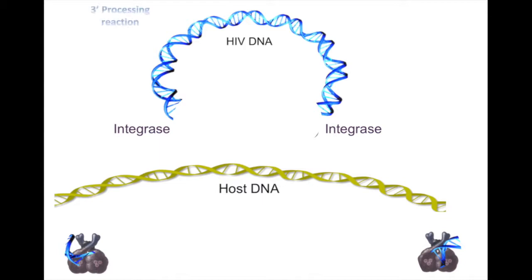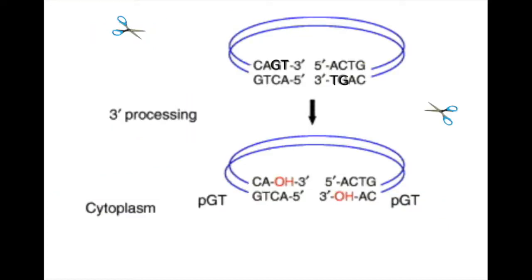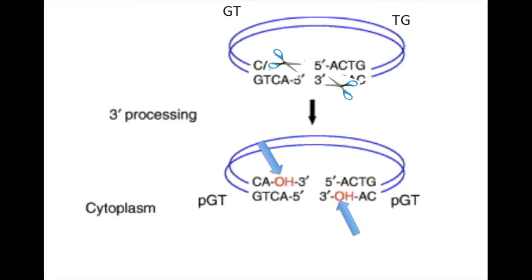HIV integrase undergoes a 3' processing reaction to integrate the HIV viral DNA into the host cell DNA. This reaction starts with the integrase dimer binding to the active site of the HIV cDNA that was formed with the help of HIV reverse transcriptase. Integrase then cuts two nucleotides — a guanine and a thymidine — from both 3' ends of the viral DNA and replaces them with a hydroxyl group, exposing a 5' AC.